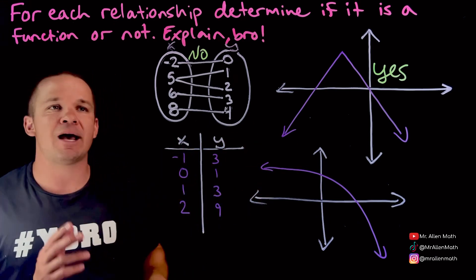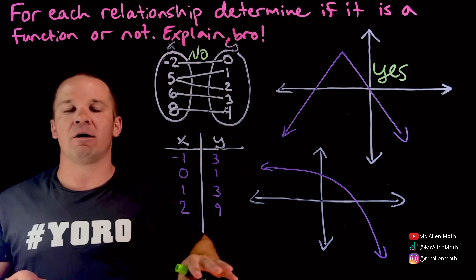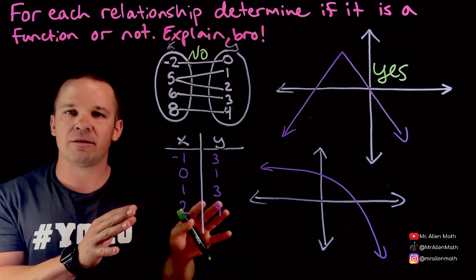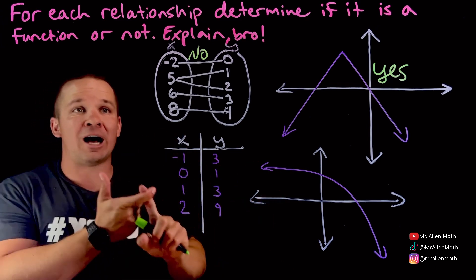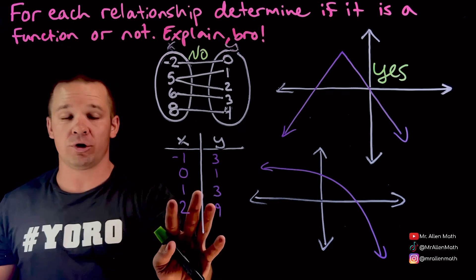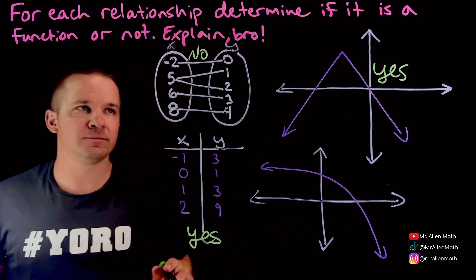But I can't have the same X value. So here I'd have like five comma one and five comma two. That's no bueno. I can't have the X's repeat there. So each input only maps to one output. Here that didn't happen. Here we're good. Next one, I should probably put yes. It's a function.